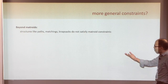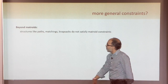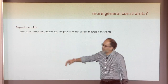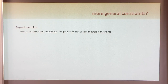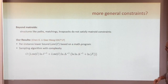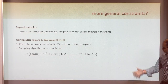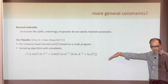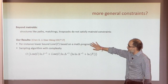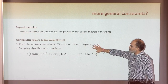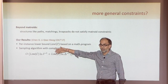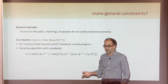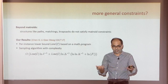This works for spanning trees, this works for matroids, but it doesn't work for matchings or other combinatorial constraints. For some time we were stuck on this. Then we came up with — inspired by some other work as well — a per-instance lower bound on the number of samples you need for a very general combinatorial structure.